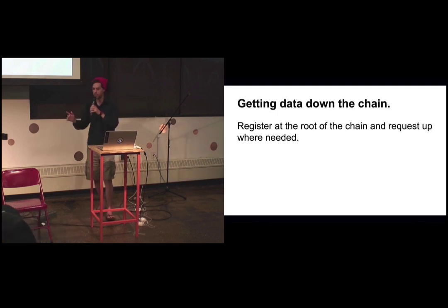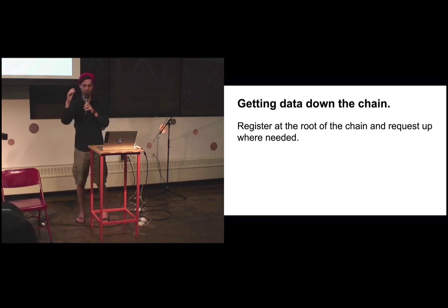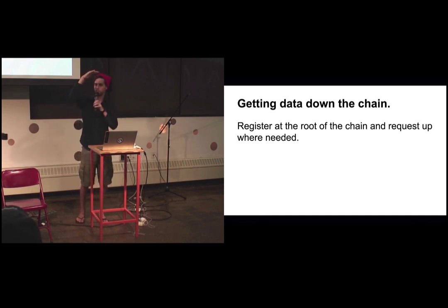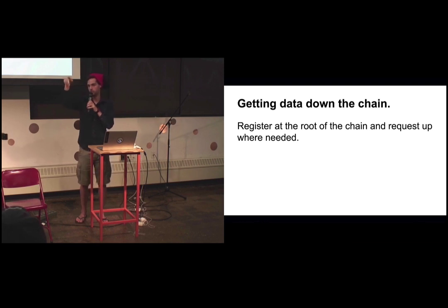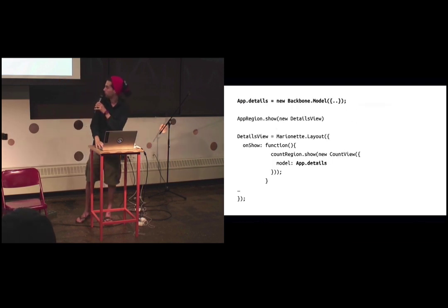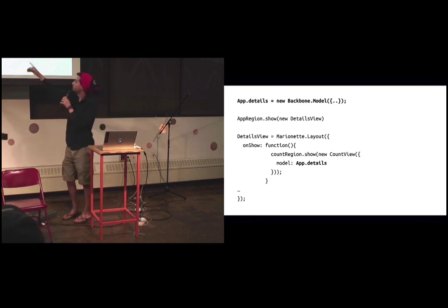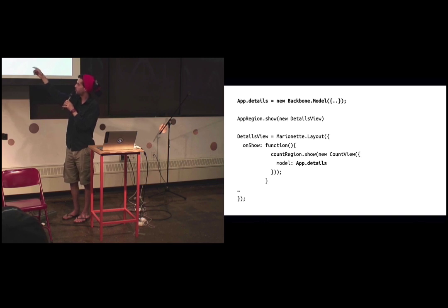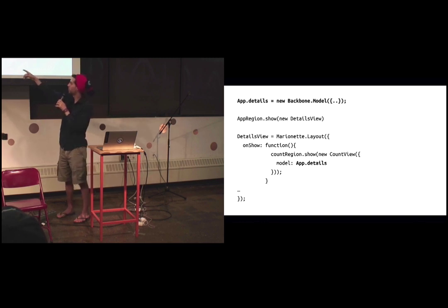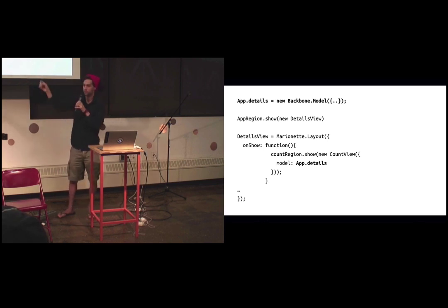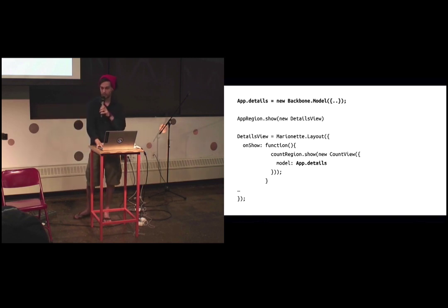Getting data down the chain is probably the wrong way to think about it. Instead, we're going to register our data at the root of the chain — the top level. Then when anyone needs that data, they just say, 'Root object, give me that data.' Here's an example: we say app.details equals some model, we show details view, and details view says, 'I'm shown, show my count region,' and it grabs app.details. None of that crazy options passing. Easy.